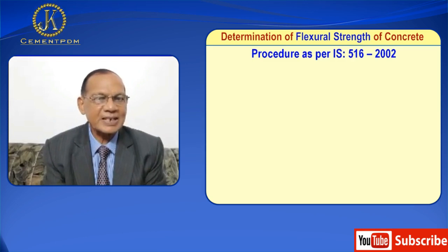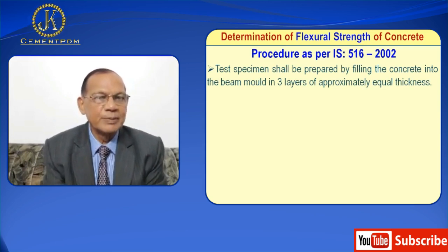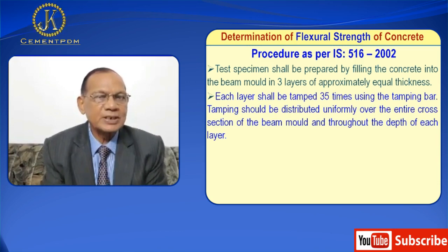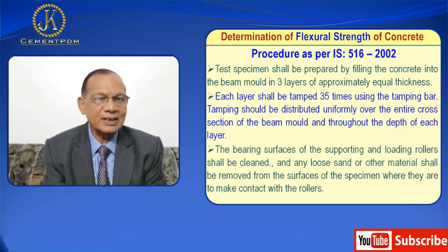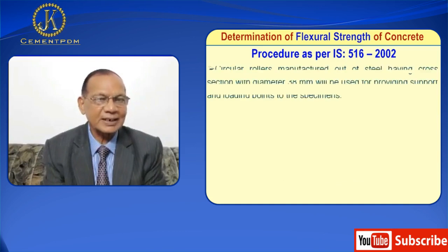As per IS 516, test specimens shall be prepared by filling concrete into the beam mold in three layers of approximately equal thickness. Each layer shall be tamped 35 times using the tamping bar, distributed uniformly over the entire cross section of the beam mold and throughout the depth of each layer. The bearing surfaces of the supporting and loading rollers shall be clean, and any loose sand or other material shall be removed from the surfaces of the specimen where they make contact.